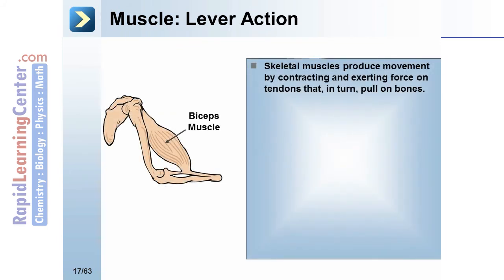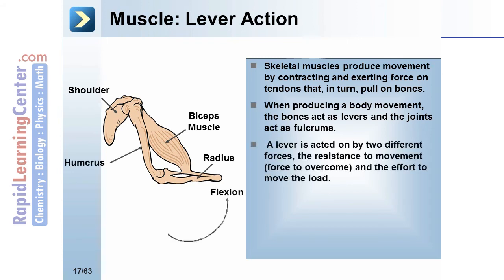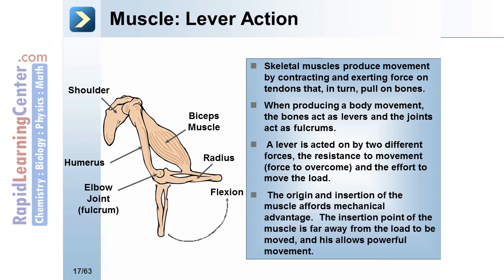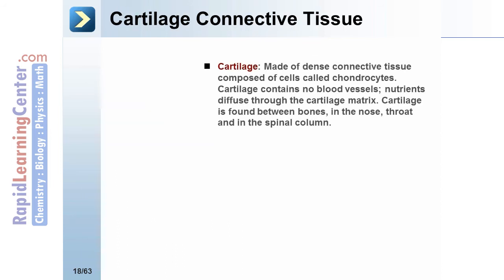Skeletal muscles produce movement by contracting and exerting force on tendons, which in turn pull on the bones. When producing body movement, the bones act as levers and the joints act as fulcrums. A lever is acted on by two different forces: the resistance to movement (the force to overcome) and the effort to move the load. The origin and insertion of the muscle afford mechanical advantage, as the insertion point of the muscle is far away from the load to be moved, allowing powerful movement.